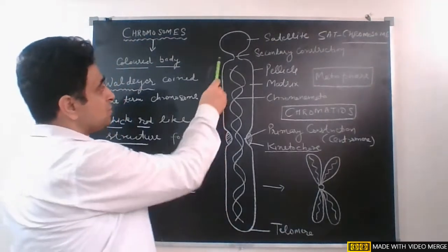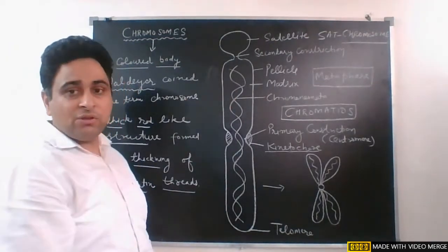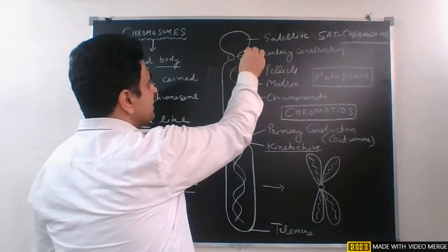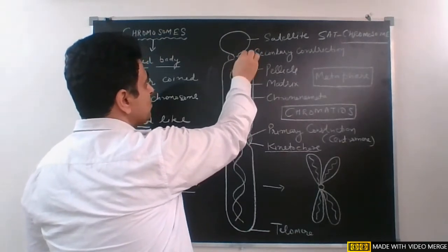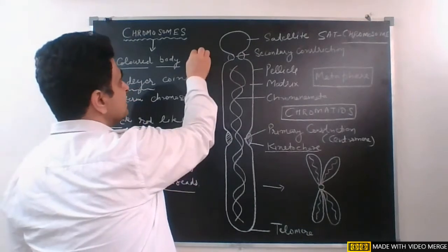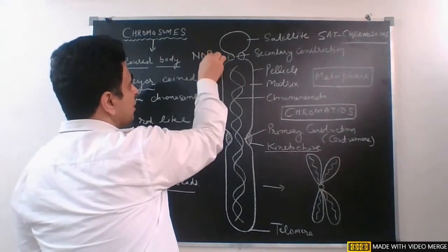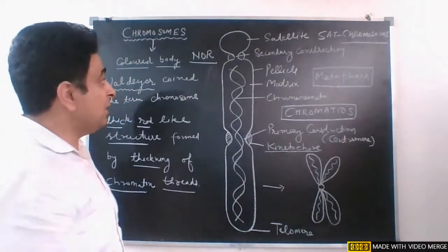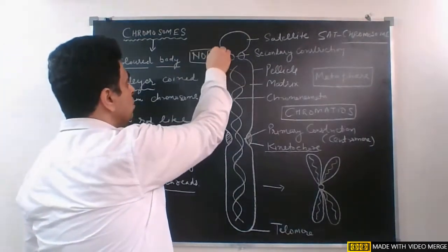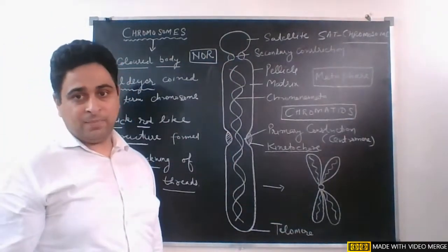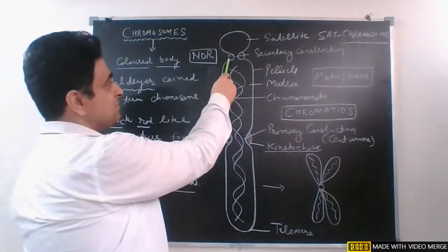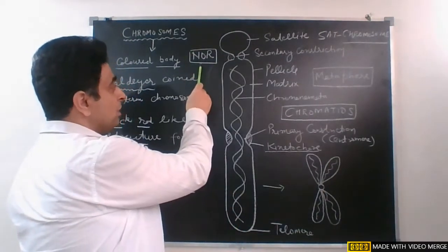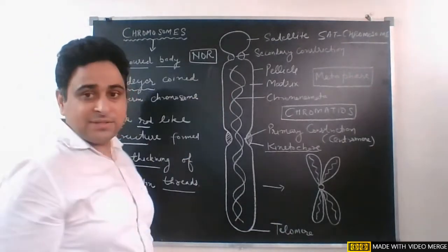In this secondary constriction, there are sometimes genes which are responsible for the formation of the nucleolus. If genes present in the secondary constriction are responsible for the formation of the nucleolus, then this region is called NOR — that is, the Nuclear Organizer Region. The function of NOR is that it has genes responsible for the synthesis of the nucleolus.